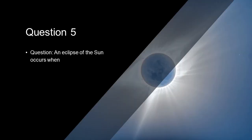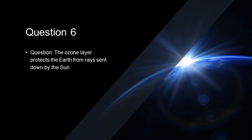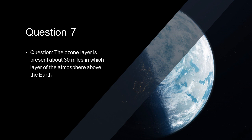An eclipse of the sun occurs when the moon is between the sun and the earth. The ozone layer protects the earth from ultraviolet rays. The ozone layer is present about 30 miles in the stratosphere above the earth.